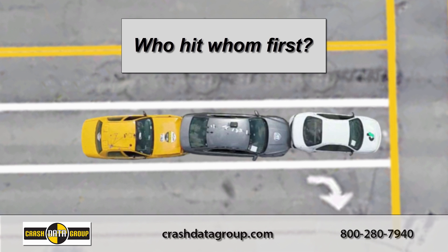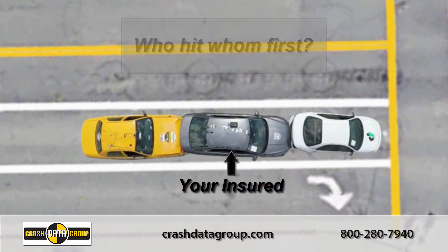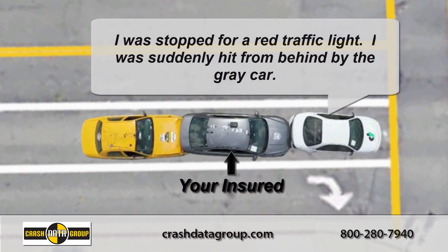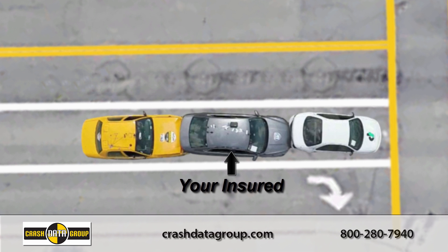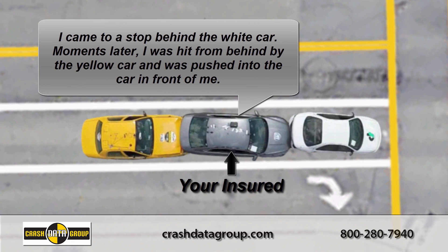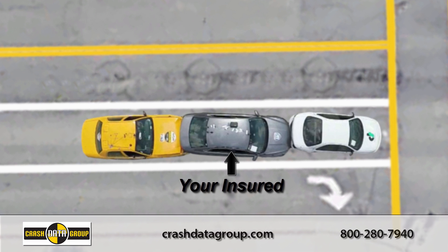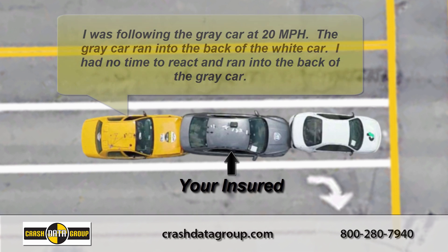Let's take a closer look at this accident or claim. Assume your insured is the gray vehicle, second in line in this three-car accident. The driver of the white car stated they were stopped for a red traffic light and was suddenly hit from behind by your insured. Your insured stated they came to a stop behind the white car; moments later, the yellow car hit them from behind and pushed them into the car in front of them.